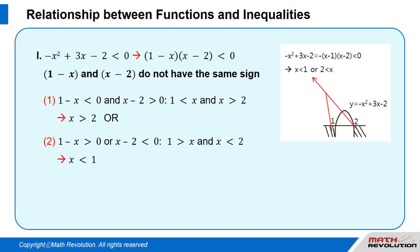Combined with x minus 2 is smaller than 0, this gives us: 1 is smaller than x and x is greater than 2, or 1 is greater than x and x is smaller than 2. The first gives x is greater than 2, and the second gives x is smaller than 1.